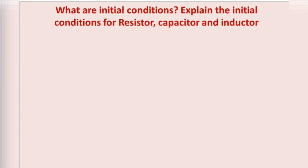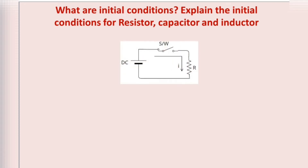The question is: what are initial conditions, and explain the initial conditions for a resistor, capacitor, and inductor? Starting with the resistor — in this circuit, resistor R is connected in series with the DC power supply through a switch.